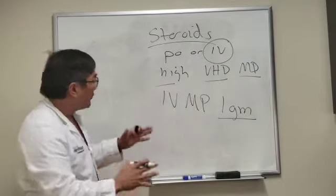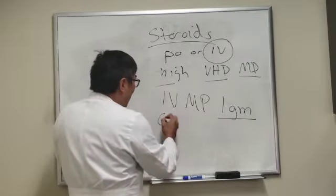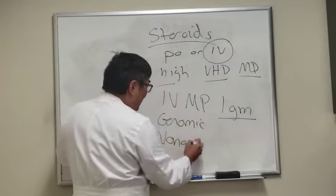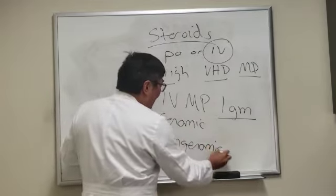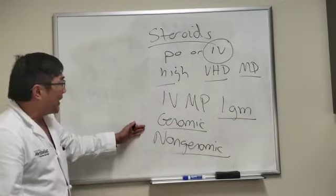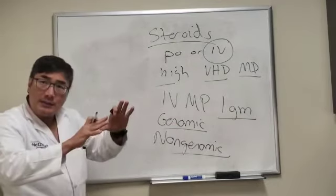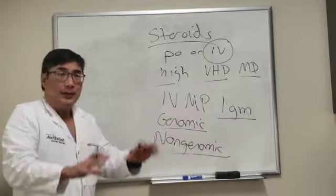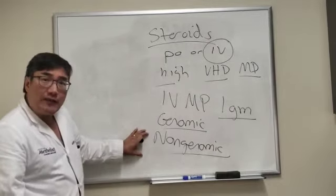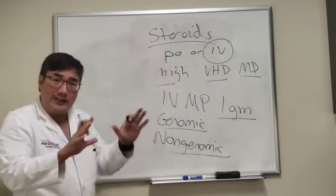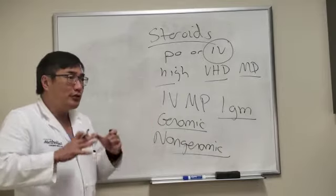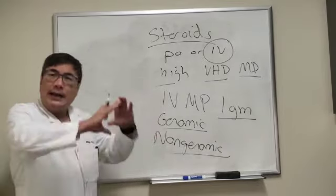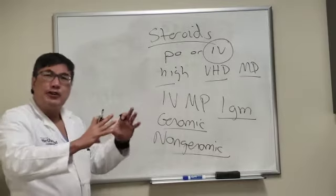The reason is that we think there are both genomic and non-genomic effects of corticosteroids, and those effects have different mechanisms of action and time of onset. The non-genomic effects are faster and are cytosolic — they occur right away. Those kinds of effects include membrane stabilization and can help reduce edema in the acute phase.